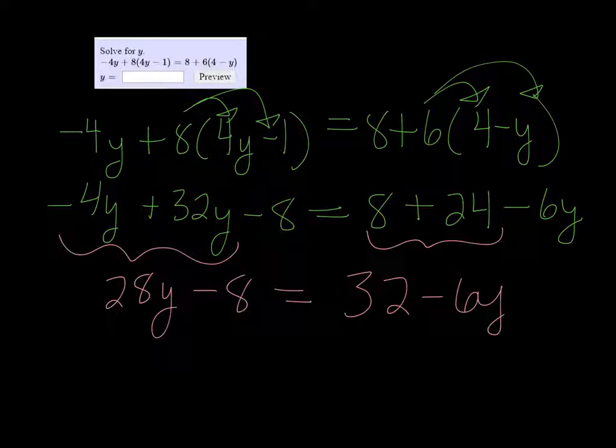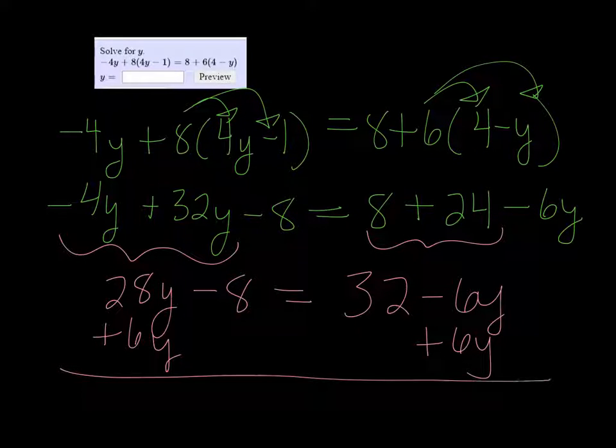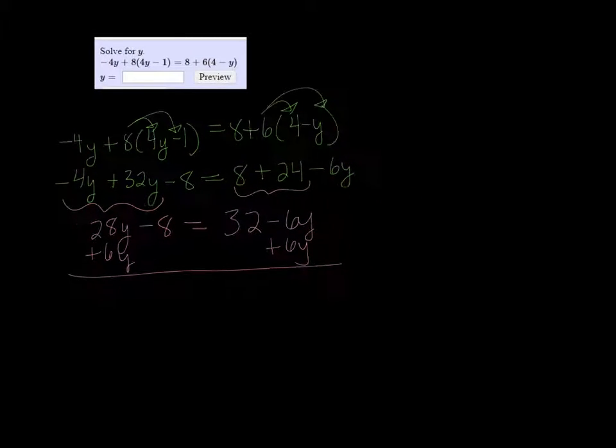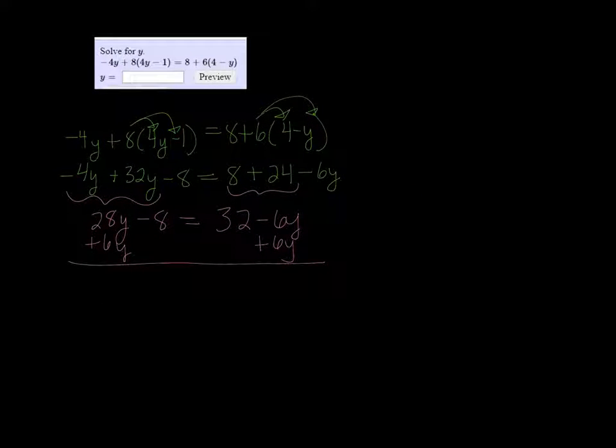All right, now we have a y on both sides, so I'm going to add 6y to both sides so that we have y only on one side. And I get 34y - 8 = 32.